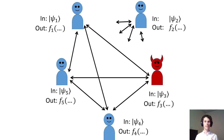Let's say that there was one corrupted party, but no one knows who. After receiving messages from four parties, you can't tell whether the last party will ever send you a message, so the protocol has to progress. This means that in the asynchronous setting, the inputs of some parties have to be ignored.